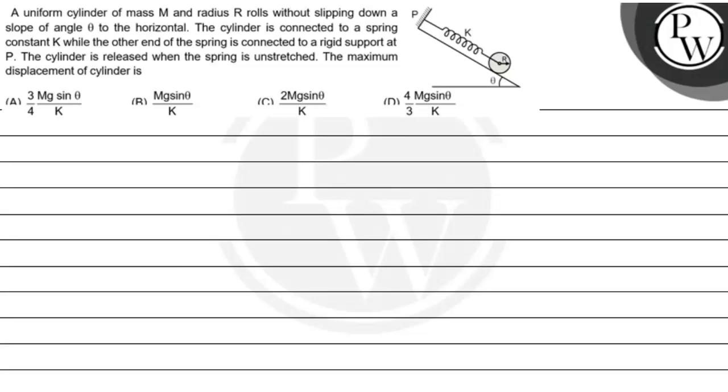Hello, Batcho. Let's read the question. The question is a uniform cylinder of mass m and radius r rolls without slipping down a slope of angle theta to the horizontal. The cylinder is connected to a spring constant k while the other end of the spring is connected to a rigid support at p. The cylinder is released when the spring is unstressed, the maximum displacement of the cylinder.